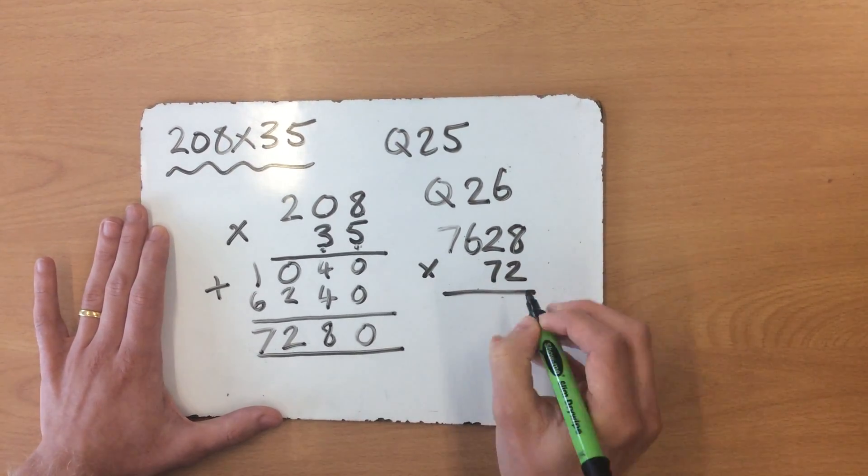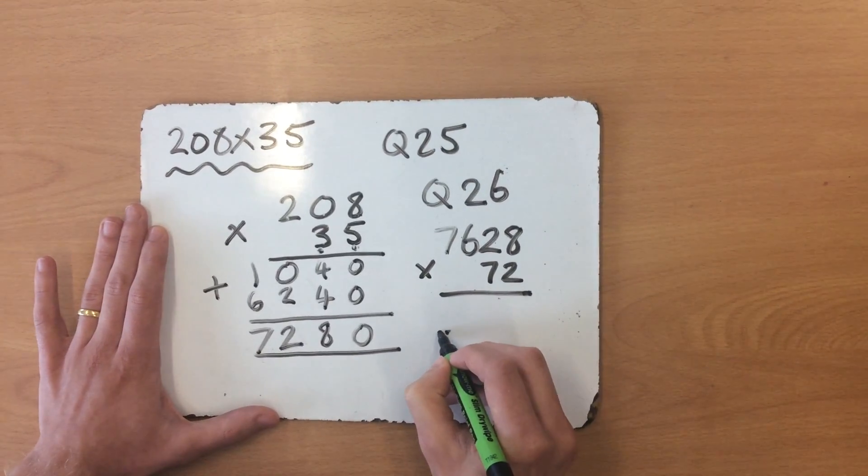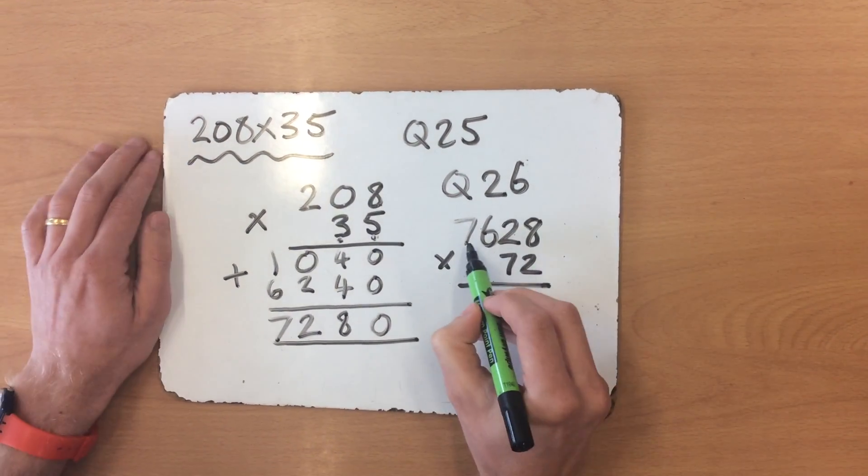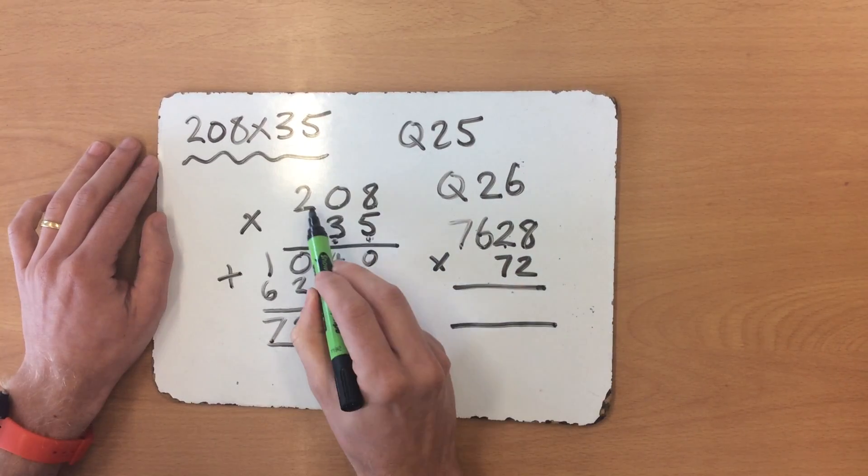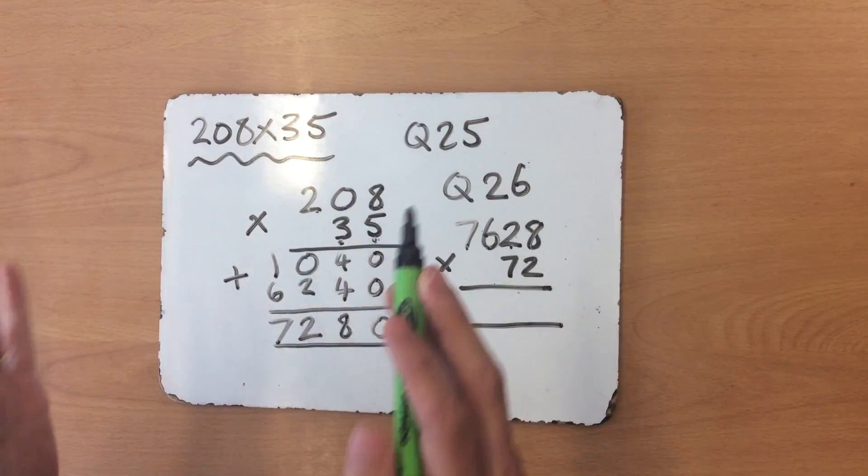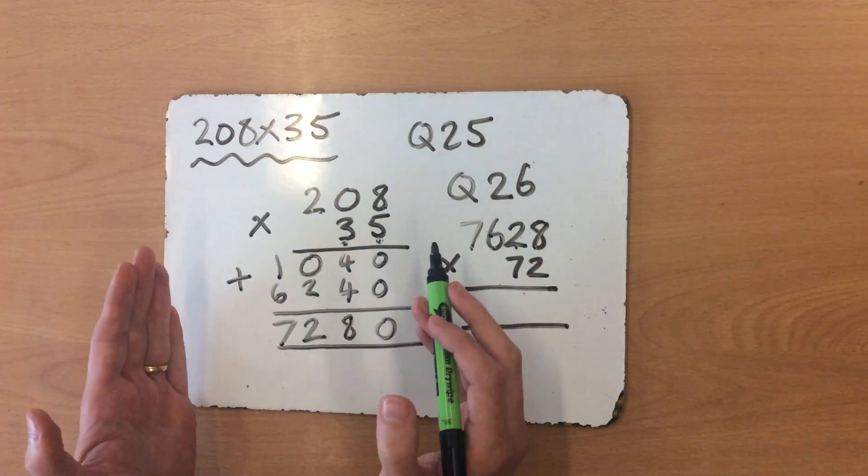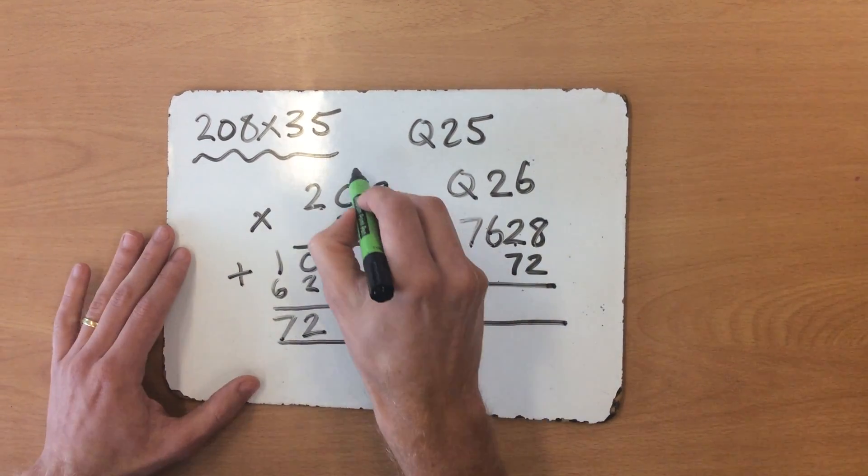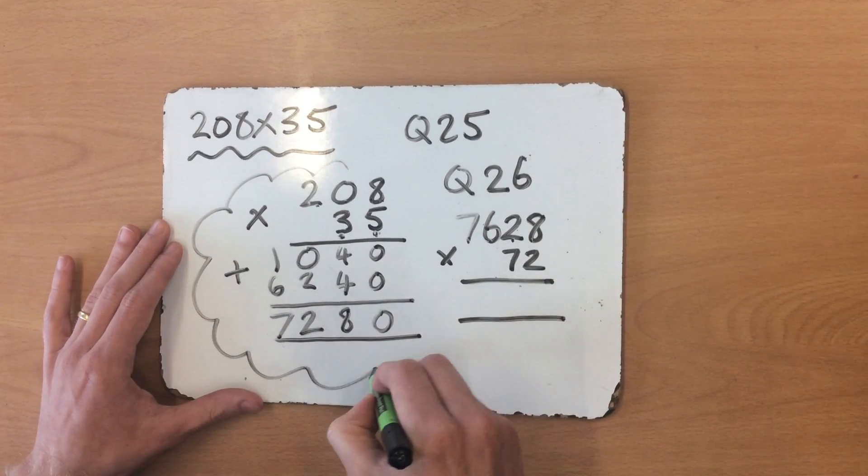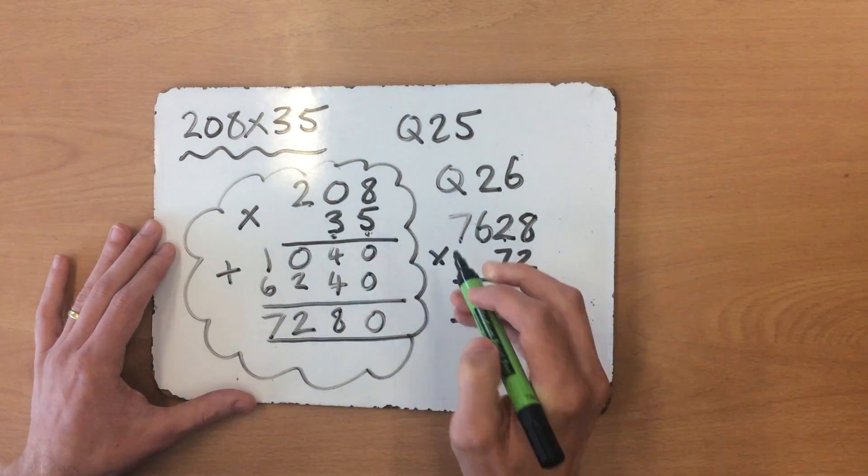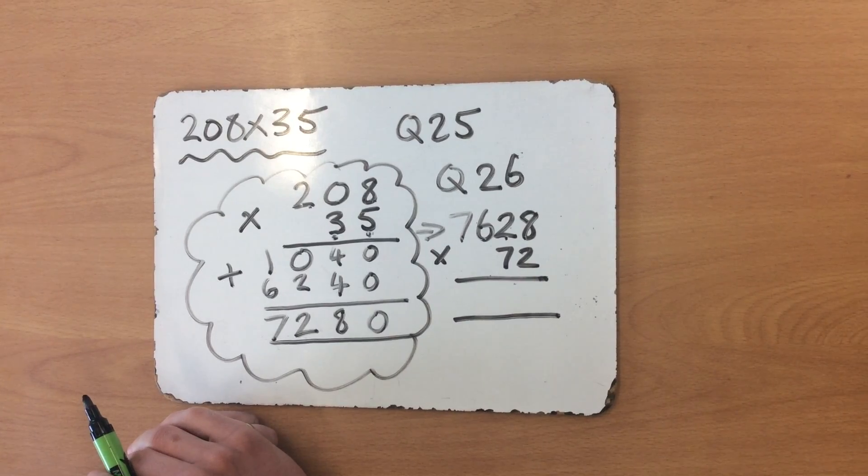I'm not going to model this one because I want you to have a go at it yourself. The only difference is this has 4 digits and this has 2 digits. However, it's the exact same method, the exact same steps. So if you can solve these types of calculations, then you can easily solve these ones as well.